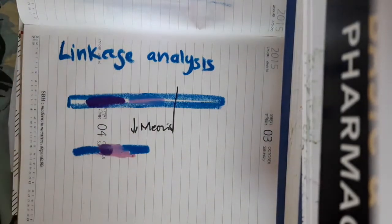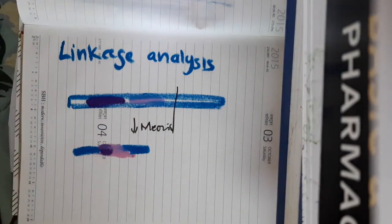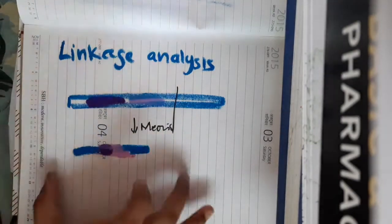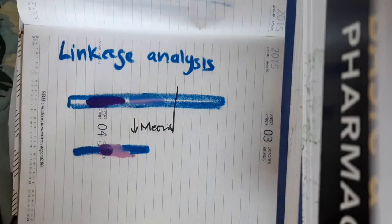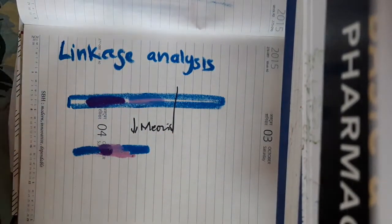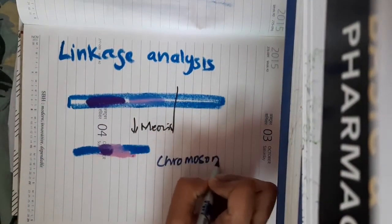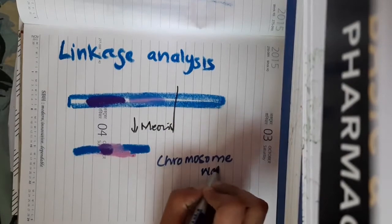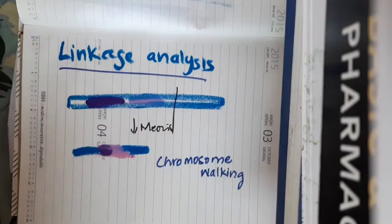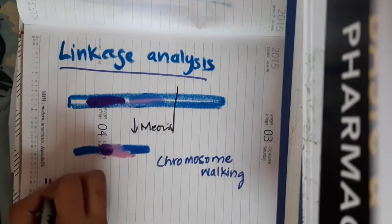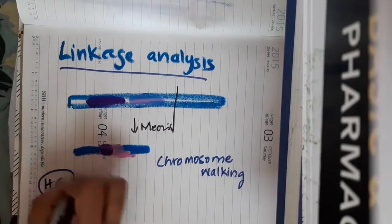These two genes which are together even after meiosis are called as linkage genes, linked genes. These linked genes can be analyzed by a technique called as chromosome walking. With the help of chromosome walking, we have identified these linkage genes in the human genome project.